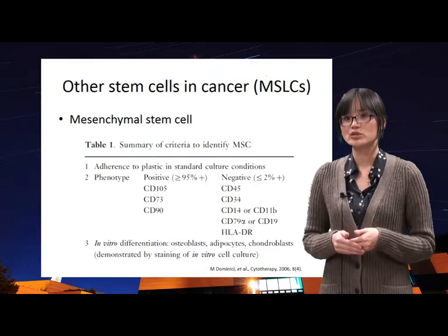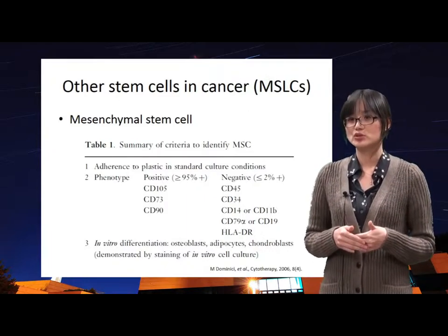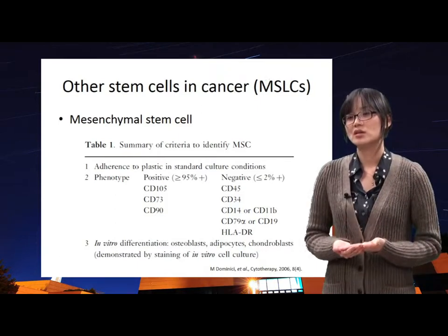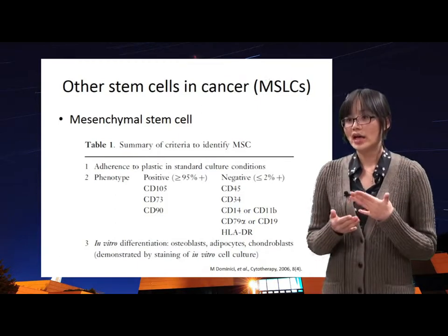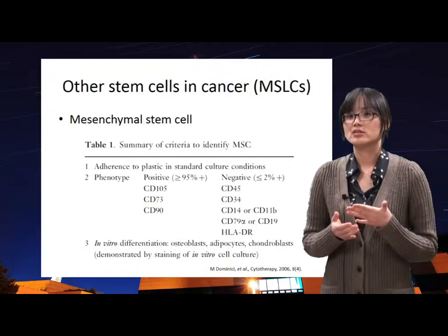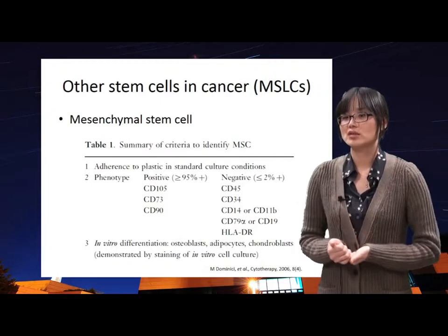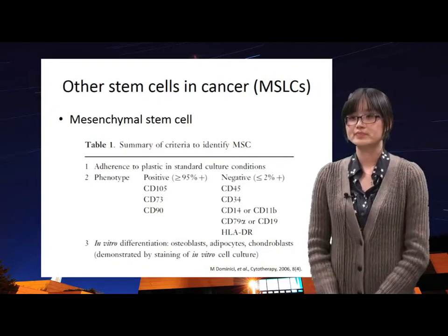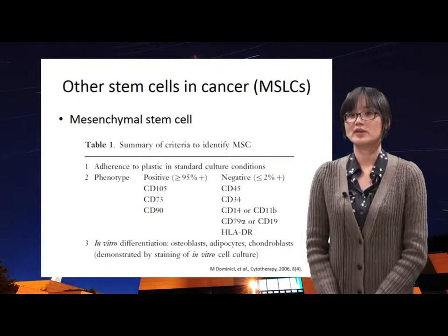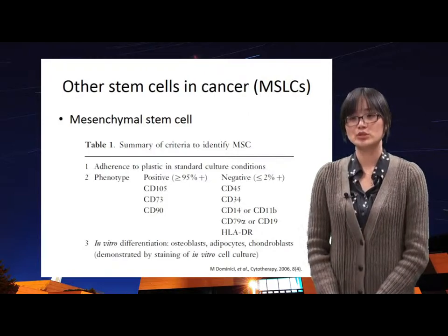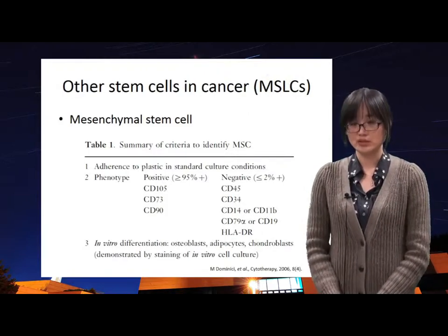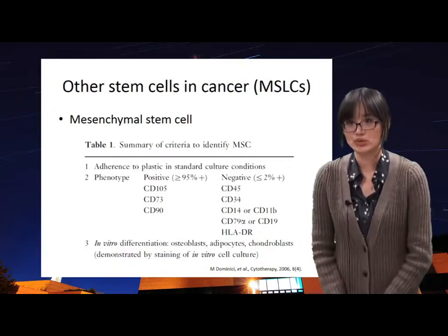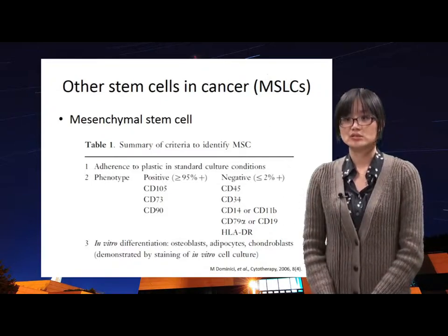Additionally, mesenchymal stem cells must be able to differentiate into osteoblasts, adipocytes, and chondroblasts under certain culture conditions. If we want to classify mesenchymal stem cells from other cells, the cells isolated from cancer tissue must meet these three conditions.